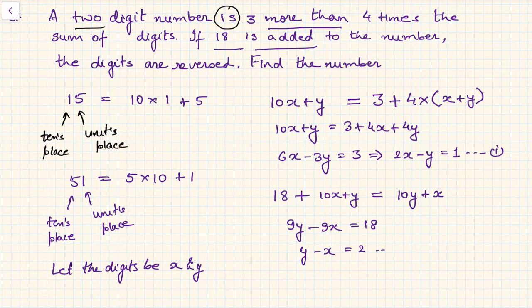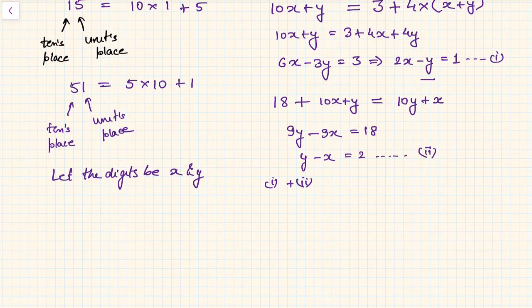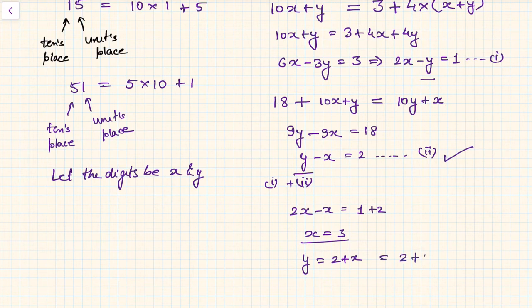Now the case is simply left to solve these two equations. So add 1 plus 2. Why am I adding? Because I can see a minus y here and a plus y here. If I add LHS, y will get eliminated. So 2x minus x is equal to 1 plus 2, so x is equal to 3. Now if x is 3, what is y? So y is nothing but 2 plus x from equation 2, so 2 plus 3, that is 5. Hence my number was xy, that is 35 is the original number.